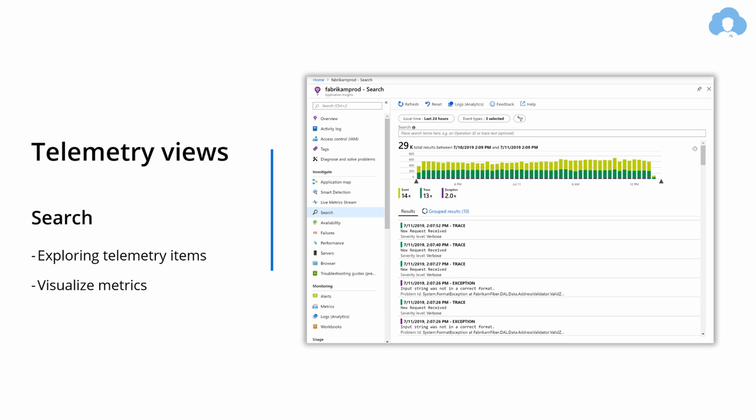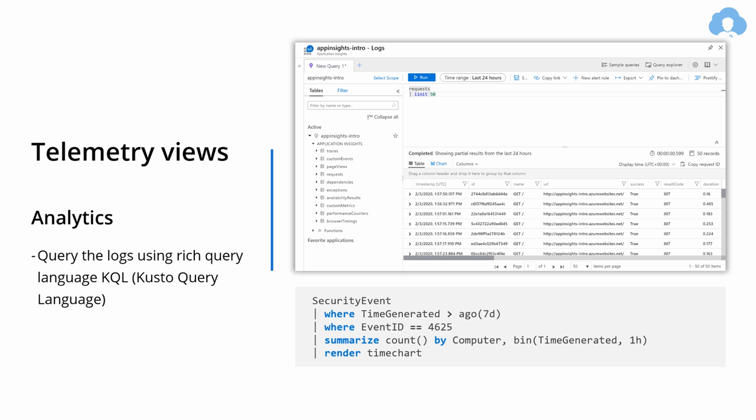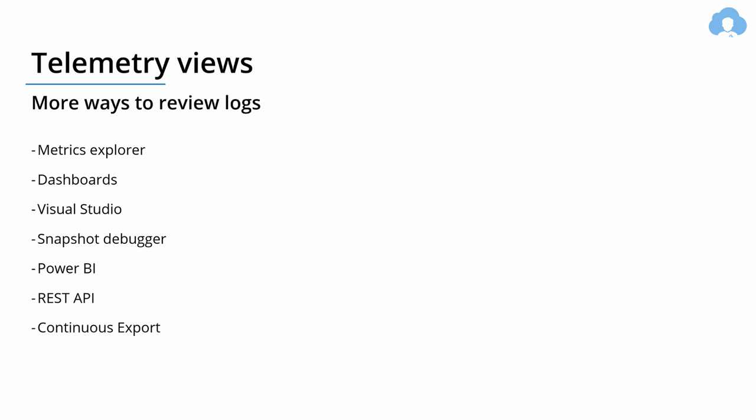If you need more advanced features, you have the Analytics panel, which lets you write powerful queries using Kusto query language — custom SQL-like queries to analyze logs from your entire application. Application Insights also has Metrics Explorer as part of Azure Monitor, letting you create dashboards from pretty much any stored metrics. You can connect from Visual Studio with native integration, do snapshot debugging for production errors, debug from memory dumps, connect with Power BI, use the REST API, or do continuous export to blob storage and use any tool to report on your logs.